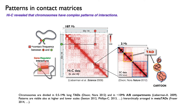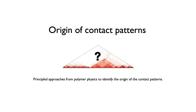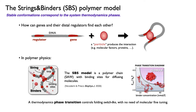Overall, the message is that nowadays data from molecular biologists are revealing a complex structure of our genome, and there are a lot of open questions. One open question is: what are the molecular and physical mechanisms underlying the formation of those ordered patterns of interactions? Since DNA is a polymer, the idea is that we can use polymer physics and the laws of physics to understand the mechanism guiding the self-organization of chromosomes.